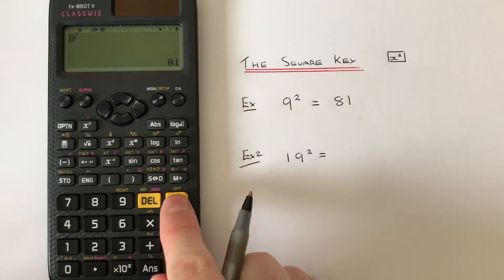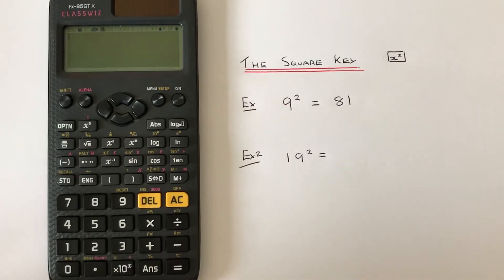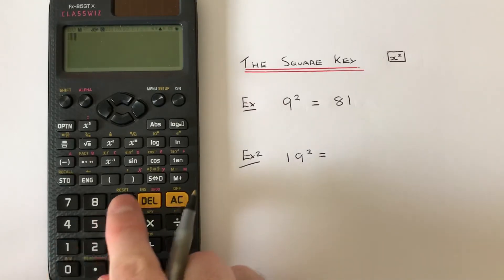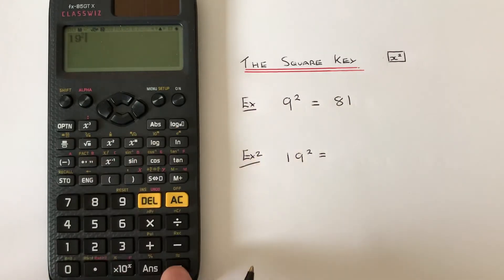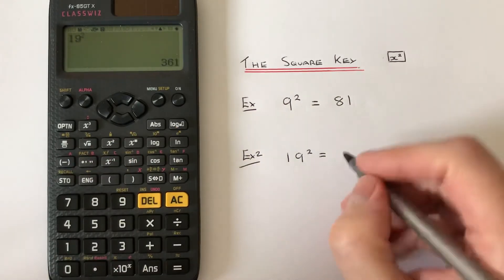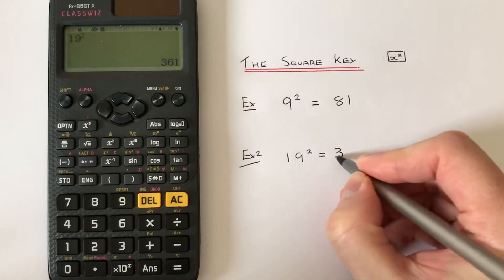If we just press AC to delete that last answer, we've got 19 squared. So if we type in 19, then press x squared, then press equals, and I get the answer 361.